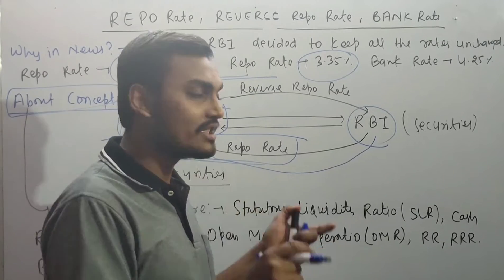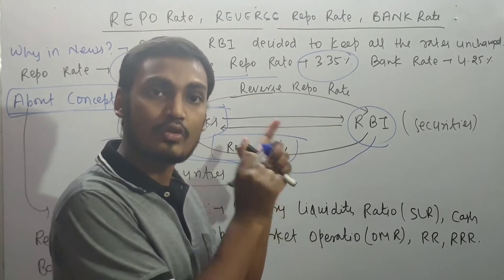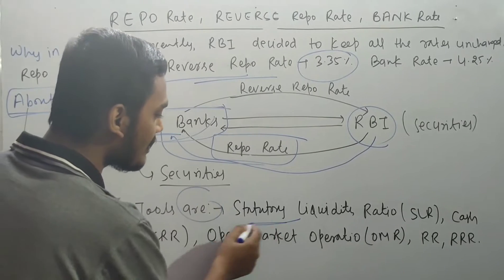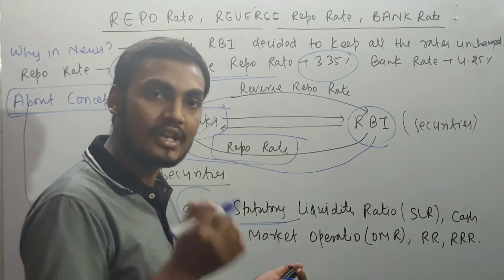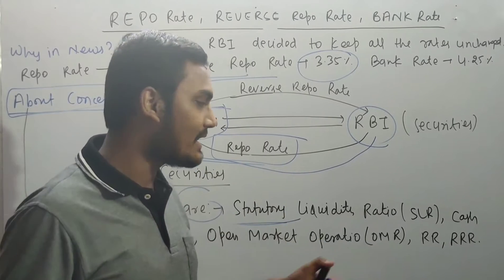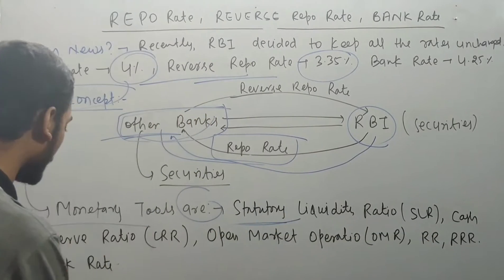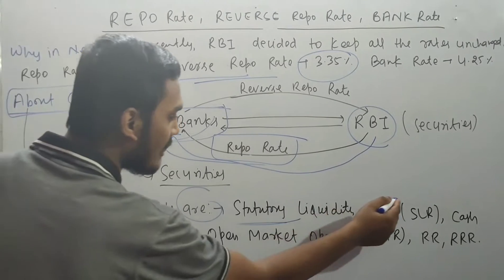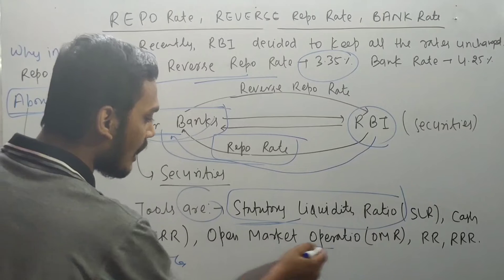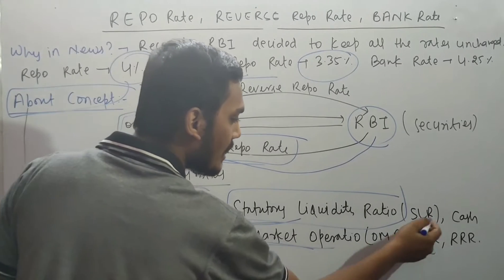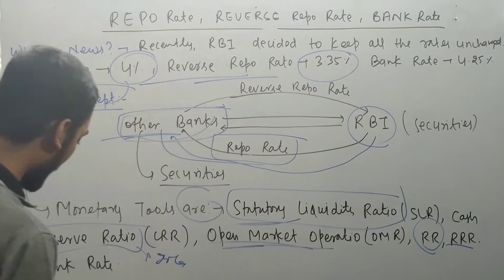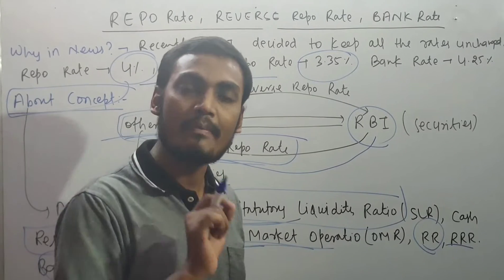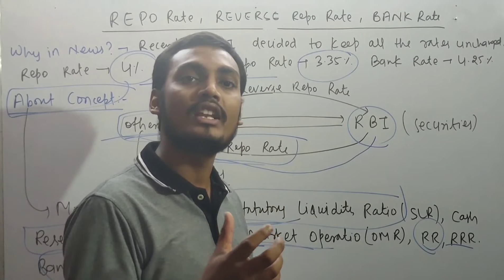These are the tools of monetary policy. The monetary policy tools include the Statutory Liquidity Ratio — a certain amount banks must keep in reserve — and the Cash Reserve Ratio, which is similar but here gold is also included, whereas in CRR only cash is kept. There are also open market operations, Repo Rate, Reverse Repo Rate, and Bank Rate. The main purpose of monetary tools is to maintain liquidity in the market.